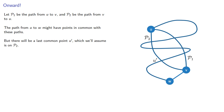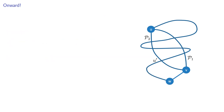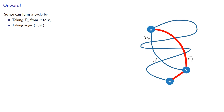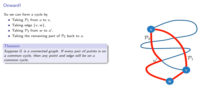So let's take the path from u prime to w, and it has to have no points in common with the cycle containing u and v — remember, u prime was the last point in common with the cycle. And so we can form a cycle by taking the path from u to v, taking the edge from v to w, taking the path from w to u prime, and then taking the remaining part of our cycle back to u. And this gives us a theorem: suppose g is a connected graph. If every pair of points is on a common cycle, then any point and edge will be on a common cycle.